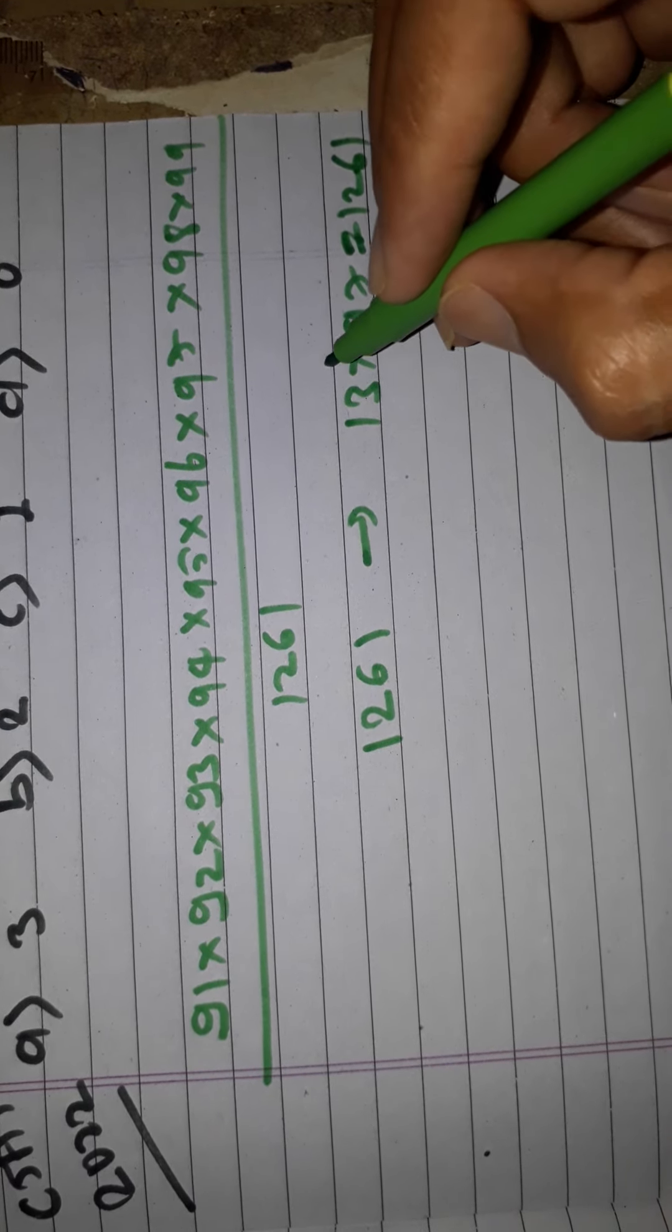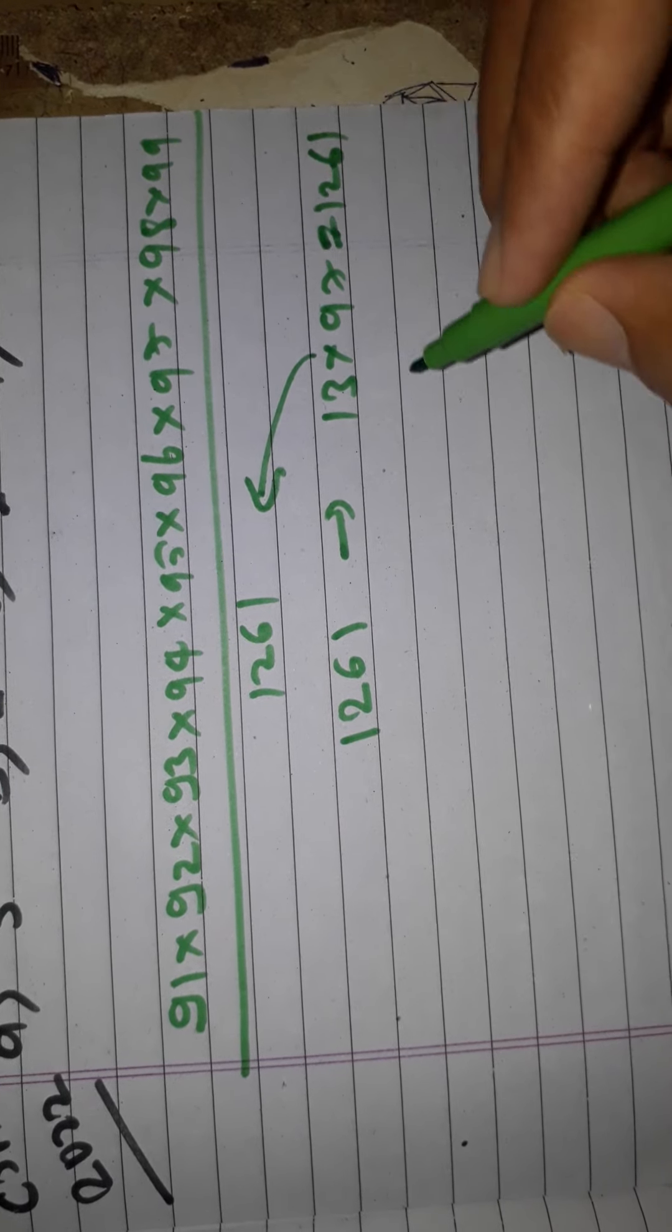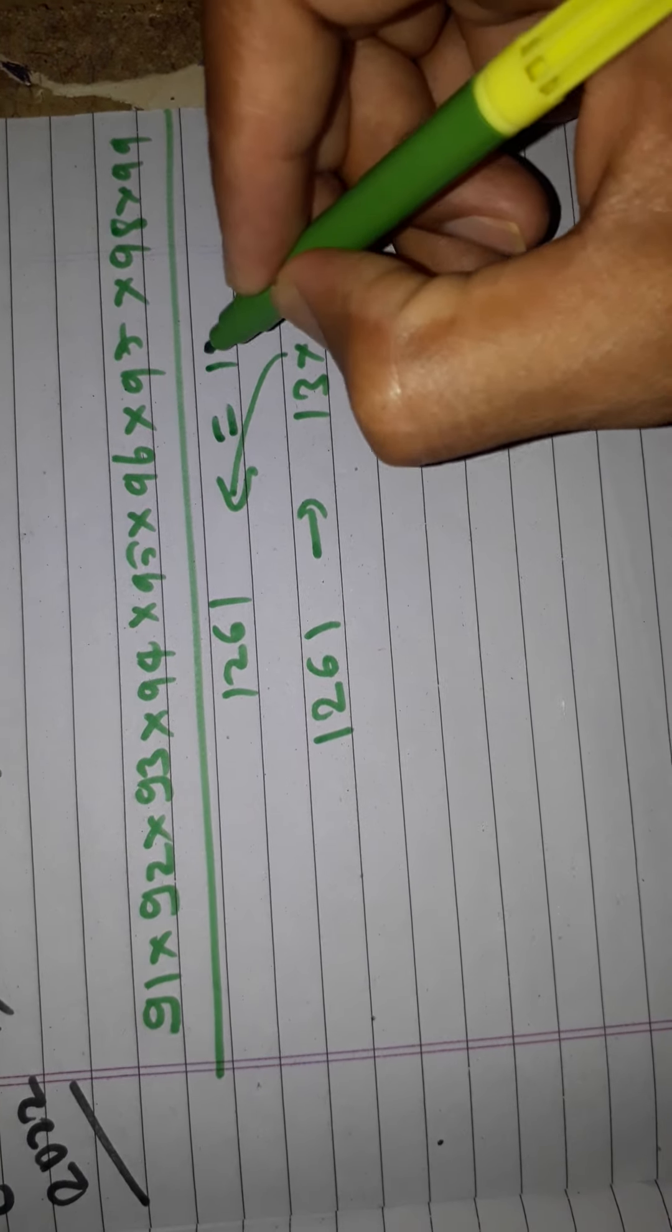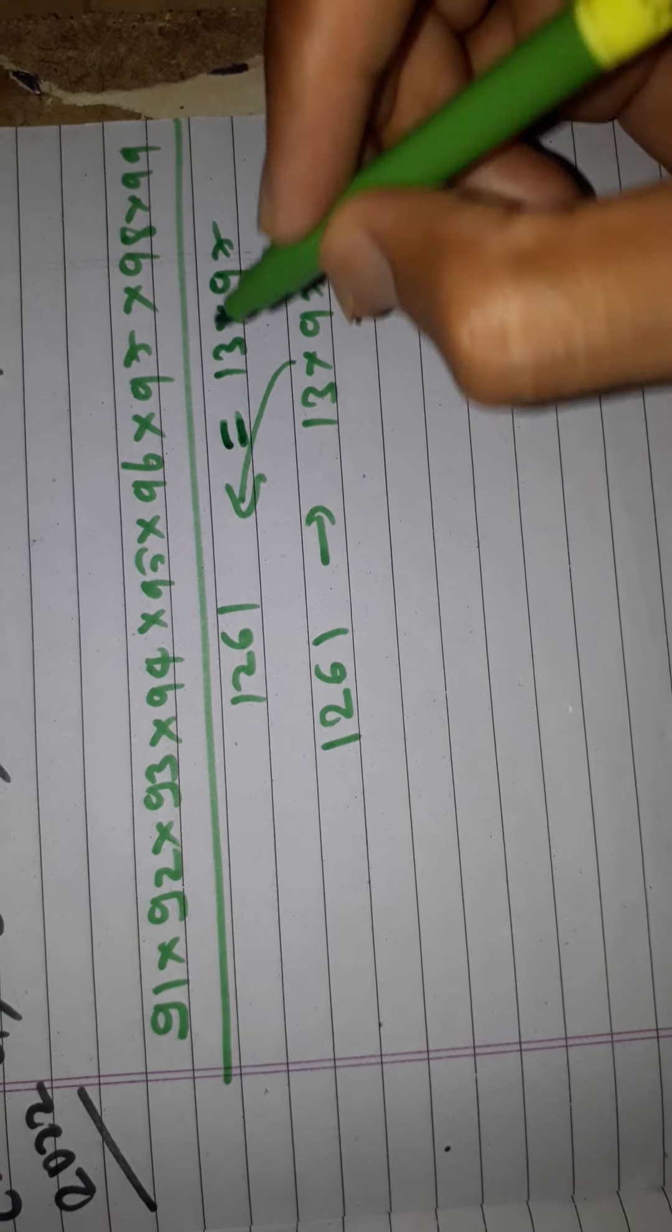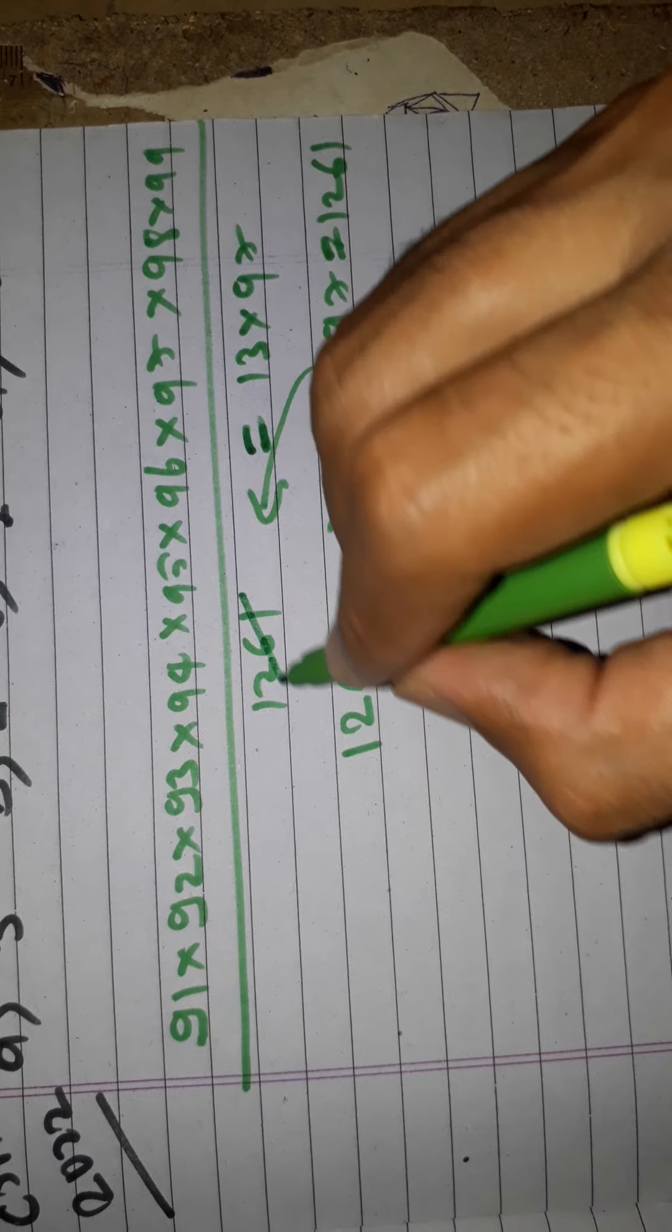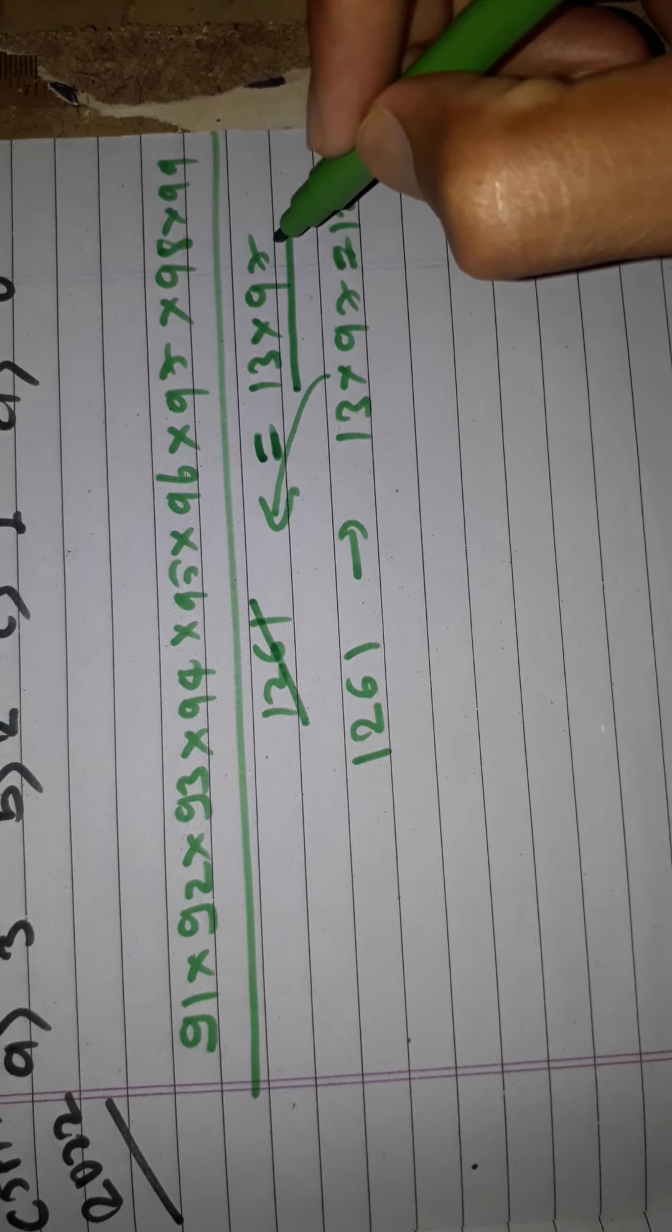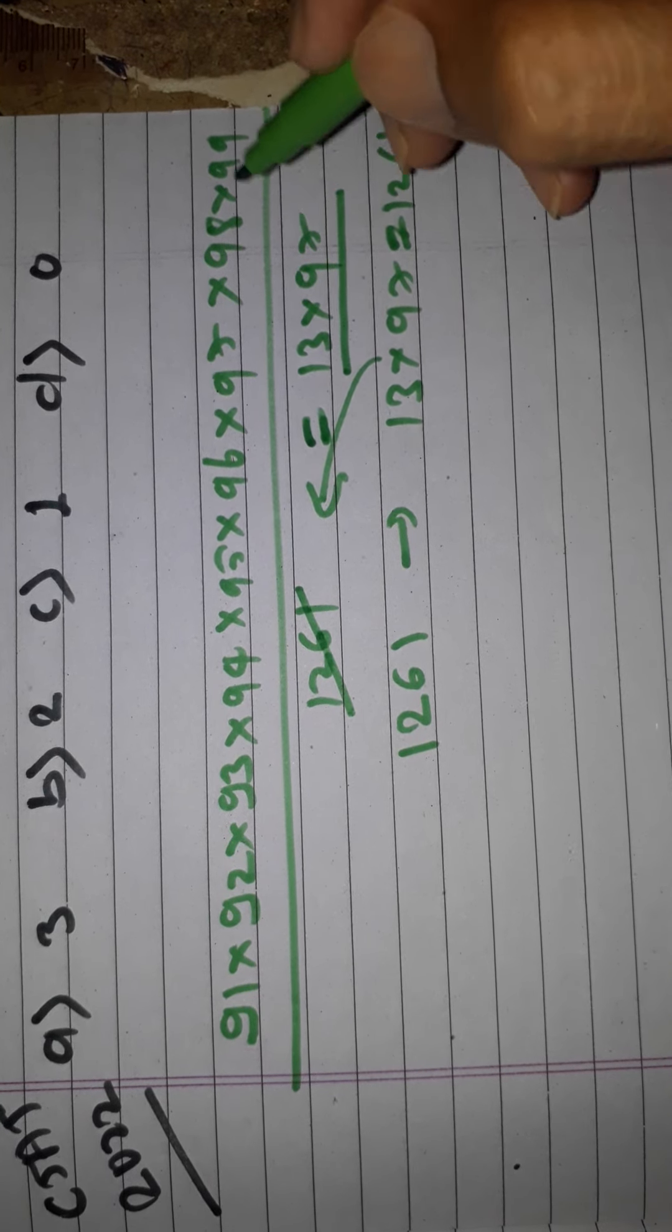We can write the replacement value of 1261. This means 1261 = 13 × 97. Now we don't need to take this value. Write this directly as 13 × 97, and we can cancel this 97 with the 97 in the numerator.